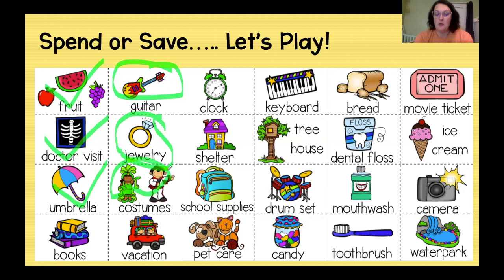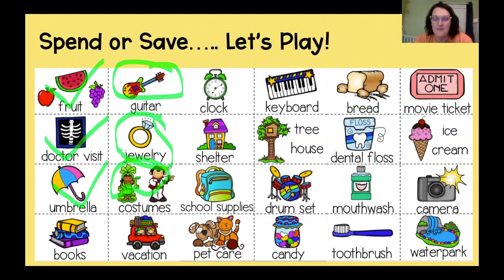I've done a lot of these. Now I want you to look at the rest of them and pick out two things that you would spend your money on — a need that you really need. Then think about two things that you would save up for. Two things that you would spend your money on and two things that you might save your money for. Wonderful job — I hope you found some great things!